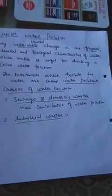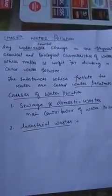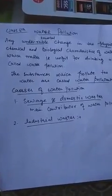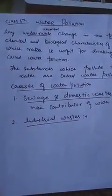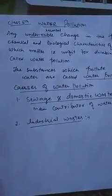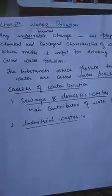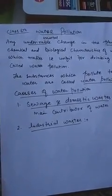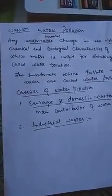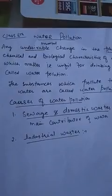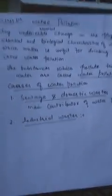Industrial wastes are those wastes which come from industries. Industries throw a lot of effluent into water bodies, causing water pollution. Industrial wastes are very harmful because industries throw chemicals — like lead and mercury — into water bodies, causing chemical changes. A famous example is the Minamata episode in Japan, where mercury was thrown into water bodies. Thousands of people died after eating contaminated fish.